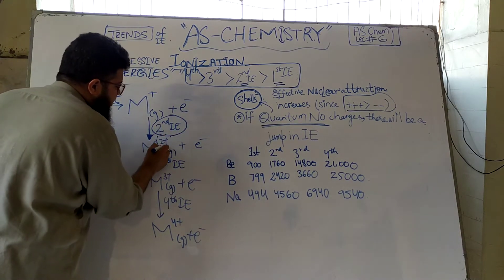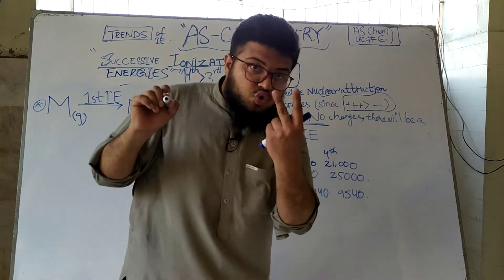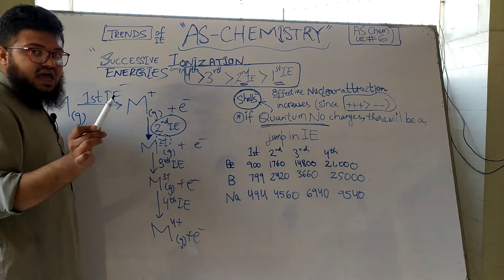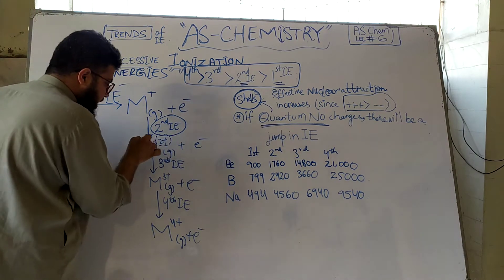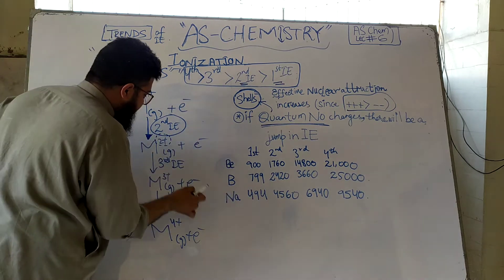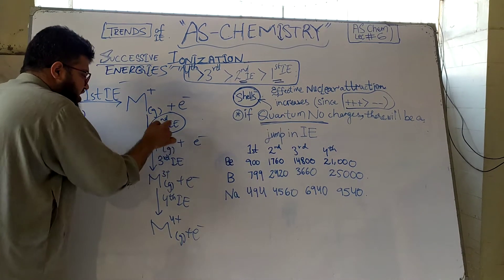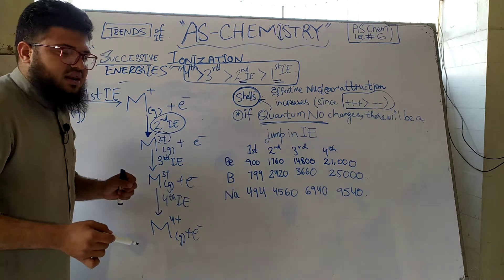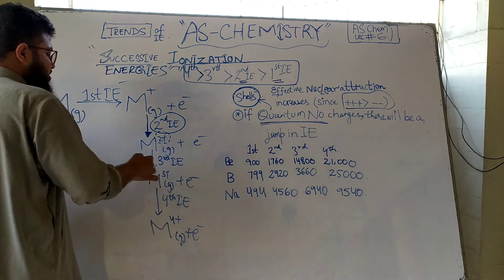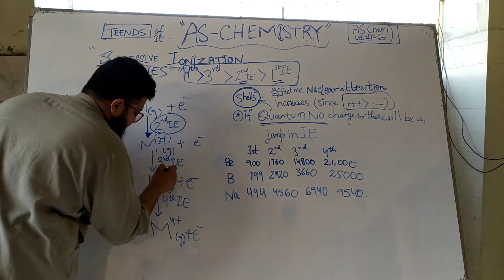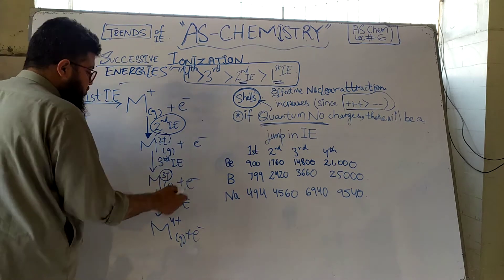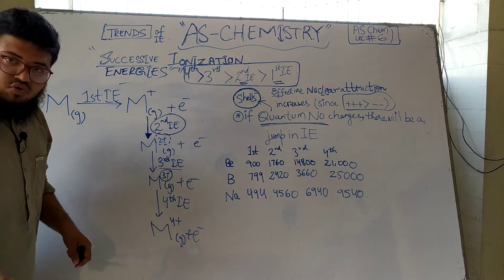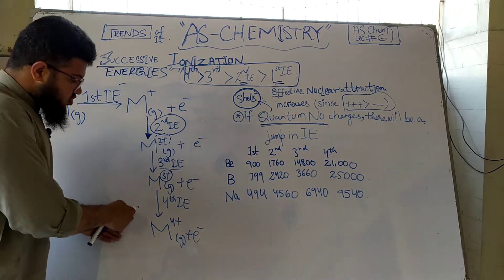The second ionization energy gives a plus-two ion. If I give more energy to this divalent ion and remove one more electron, the charge becomes plus three — that is the third ionization energy, because it is the third electron removed. This can continue to the fourth, fifth, sixth ionization energy and so on.